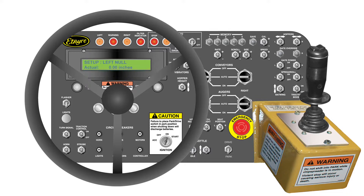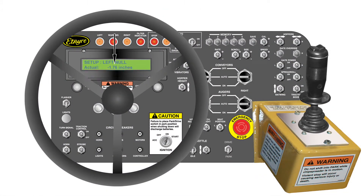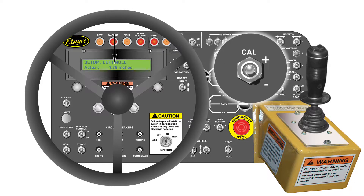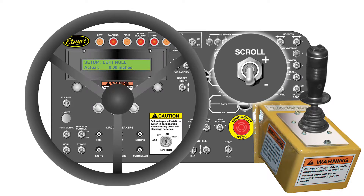This screen is used to set the actual closed position of the left gate. Be sure that the gate is actually closed. This number should read 0 inches. If this number is not 0, set it to 0 using the cal switch. When it is set to this value, push the scroll switch down to move to the next screen.